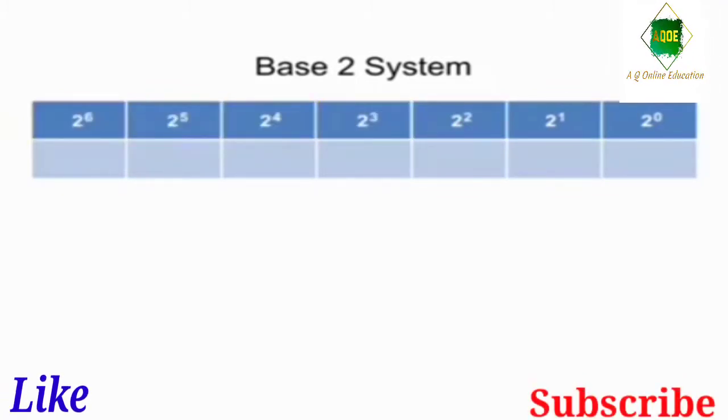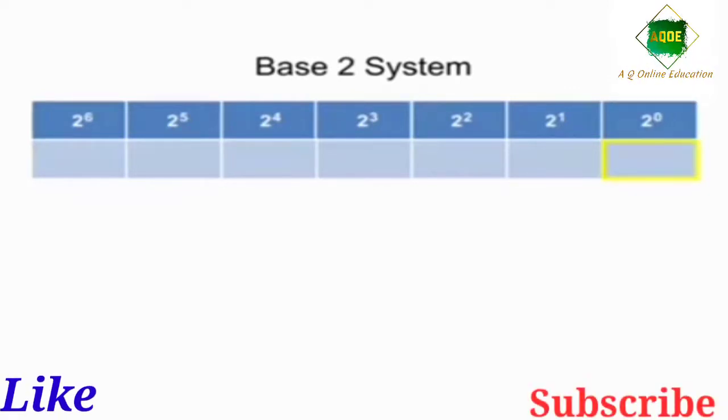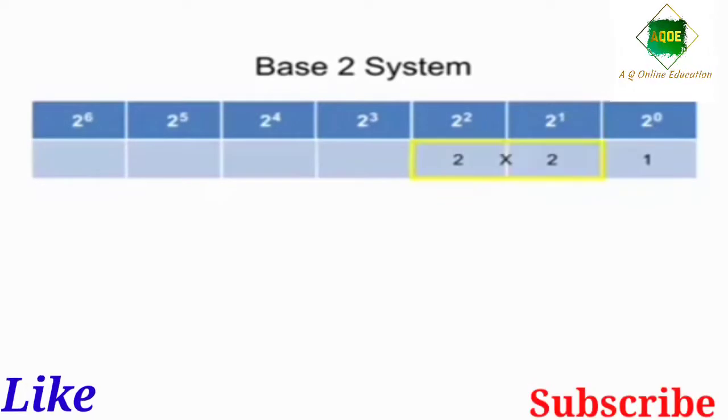Thus, each multiplier to the left is 2 times the preceding number. Starting with position 1, we have 2 to the 0 power, or 1. Position 2 is 2 to the first power, or 2. Position 3 is 2 to the second power, or 4, and so on.